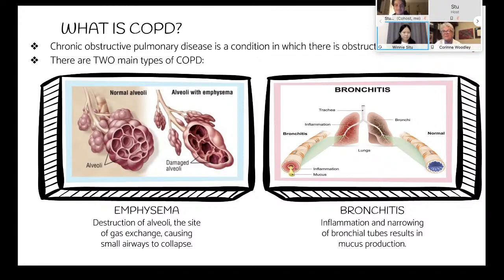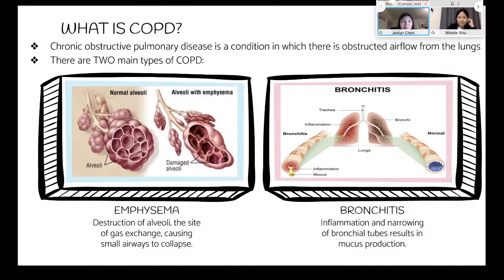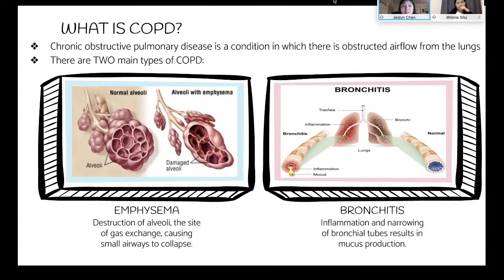Some of you may have COPD or have heard about it. Basically it's chronic obstructive pulmonary disease — where your airflows are obstructed, so it's harder to breathe. There are two main types: emphysema and bronchitis. Emphysema involves damage to your alveoli, which is where gas exchange happens. They're very small, fragile sacs — about one cell thick — easily damaged through smoking, particulate matter, or other damaging fumes.